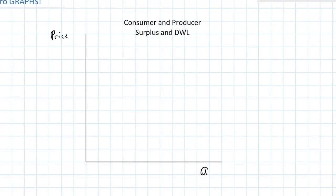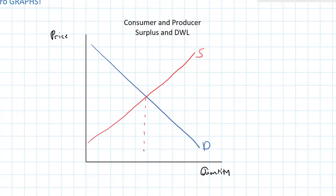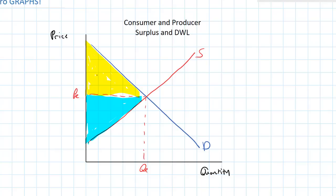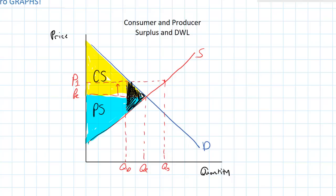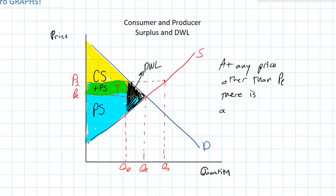Next we'll talk about consumer and producer surplus. Starting with the market in equilibrium, consumer surplus is the area below the demand curve and above the equilibrium price — this represents the additional happiness of consumers who paid less than they were willing to pay. Producer surplus is the area below the price and above the supply curve, representing the extra welfare of producers who sold the good for more than they were willing to. At a price above equilibrium, such as P1, there is a deadweight loss — a loss of total surplus. At any price other than PE, there is a deadweight loss.